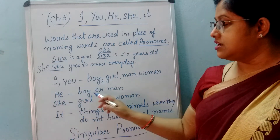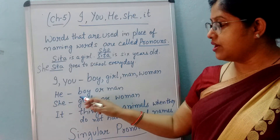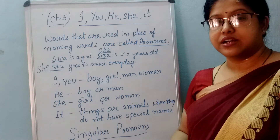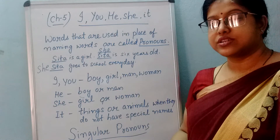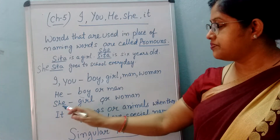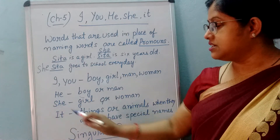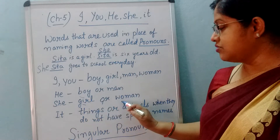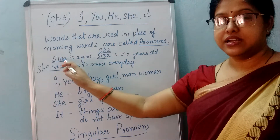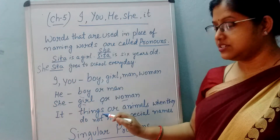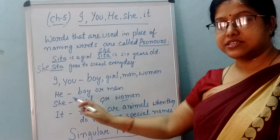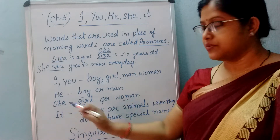He — he boy ke liye ya man ke liye lagta hai. Agar koi ladka ya aadmi hai, us ke liye he lagta hai. She — she girl ya woman ke liye lagta hai. Jaise Sita girl hai, to us ke liye she lagata hai. To us girl or woman ke liye she lagta hai.